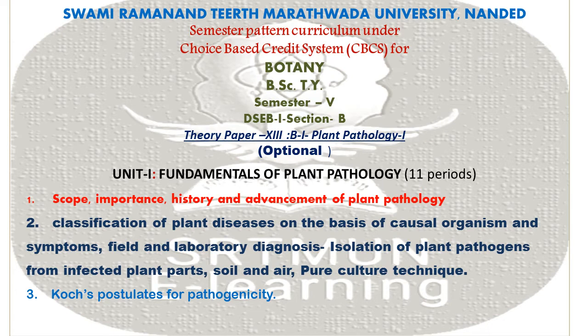Fundamentals of Plant Pathology. Subunit 1: Scope, importance, and history of advancement of plant pathology. Subunit 2: Classification of plant disease on the basis of causal organism and symptoms. Field and laboratory diagnosis, isolation of plant pathogens from infected plant parts, soil and air, pure culture technique. Koch's postulates for pathogenicity.